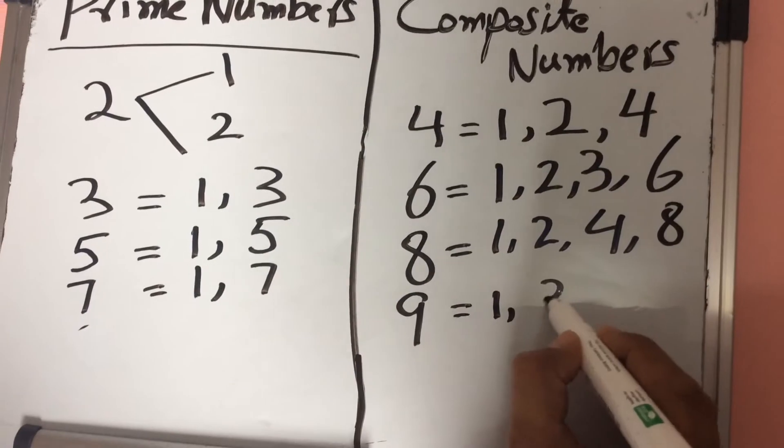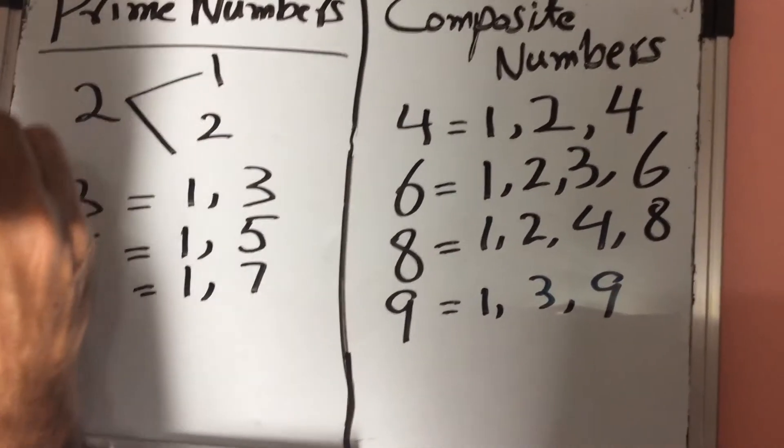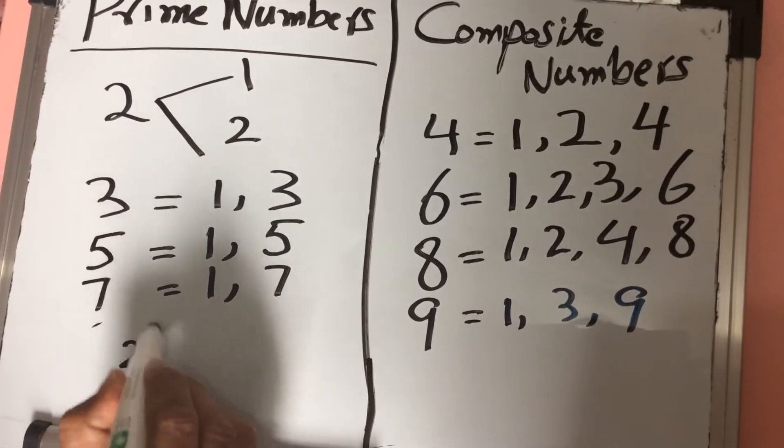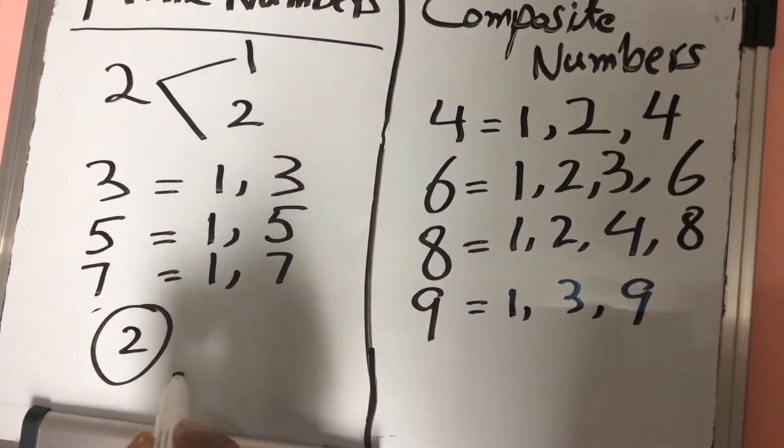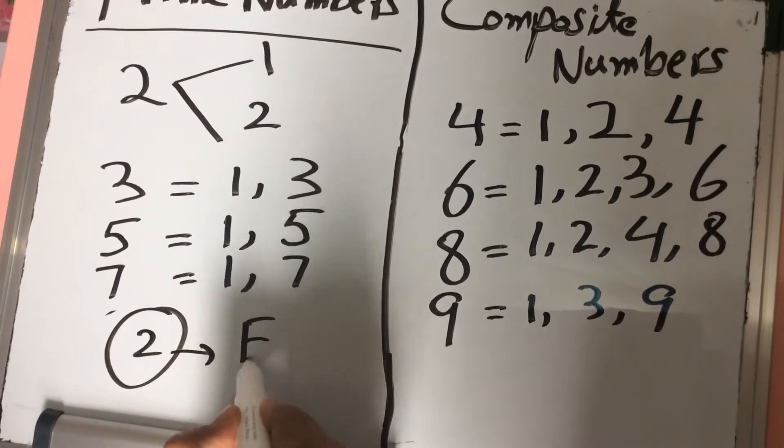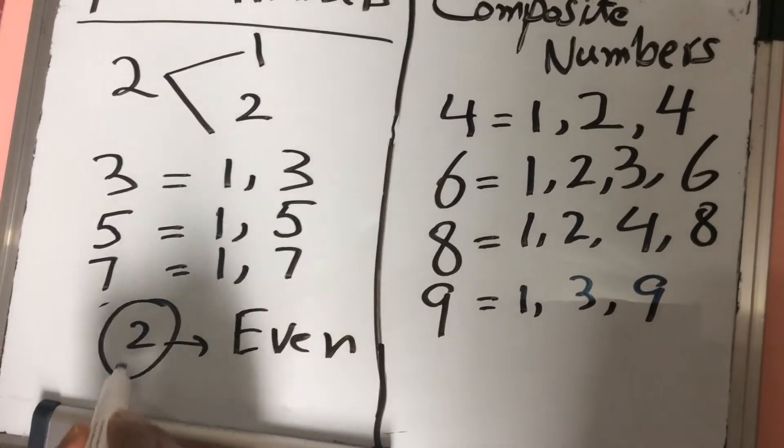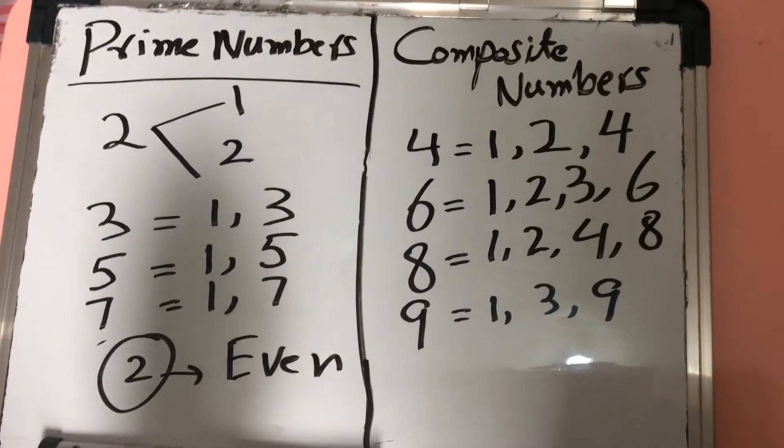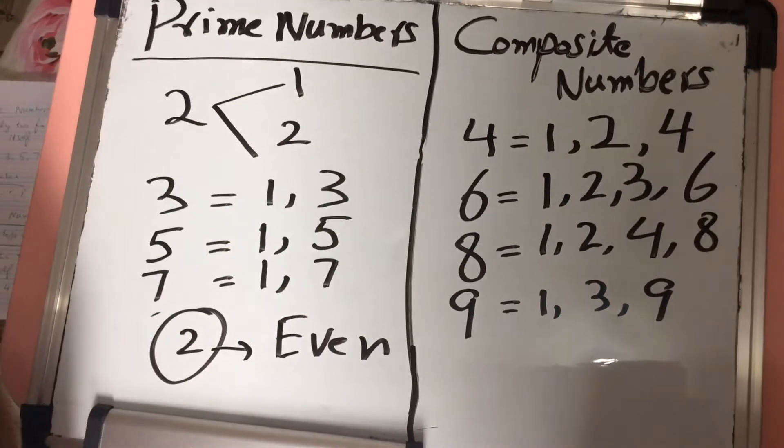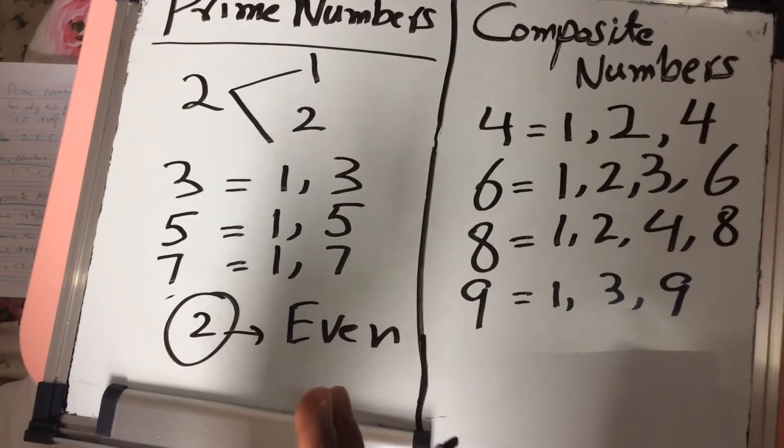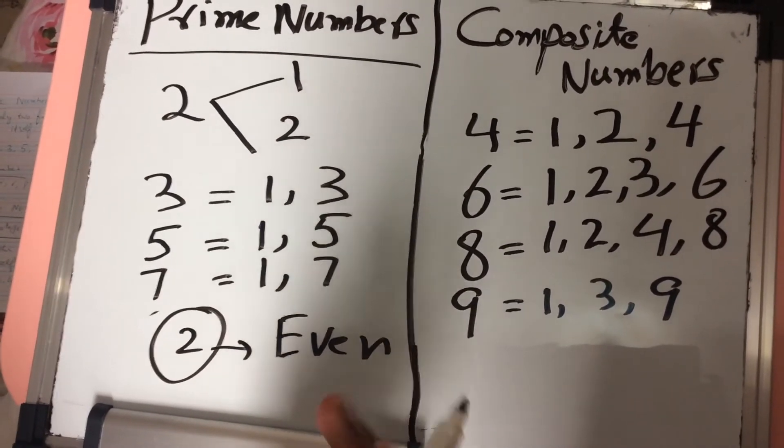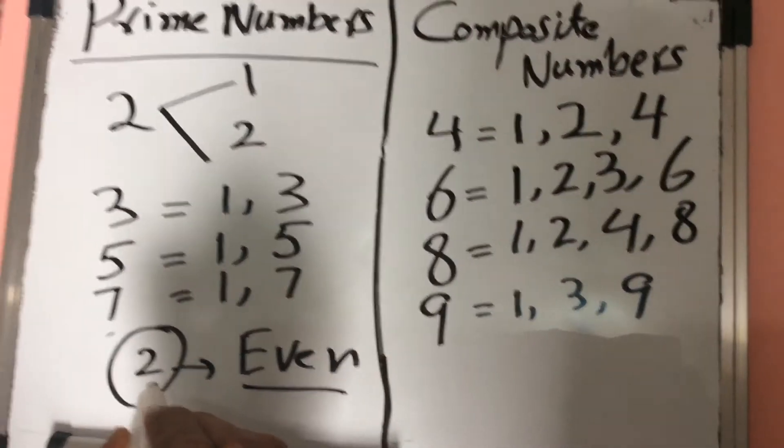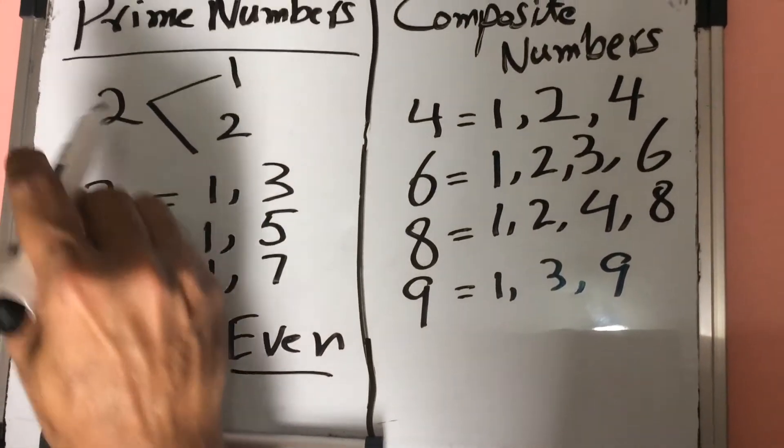1, 3, 9. 2 is a unique number. 2 is a very unique number. It is a prime number and it is also an even number because it can be divided by 2. Any number that can be divided by 2 is called an even number. So 2 is a unique number that is prime as well as even.